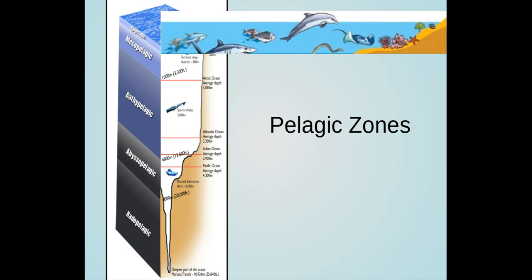The epipelagic zone, the illuminated surface zone, stretches from the surface down to the depth where photosynthesis can no longer occur because of limited light, usually around 200 meters. Since light is absorbed quickly with depth, only a small percentage of the sunlight ever reaches this far down.